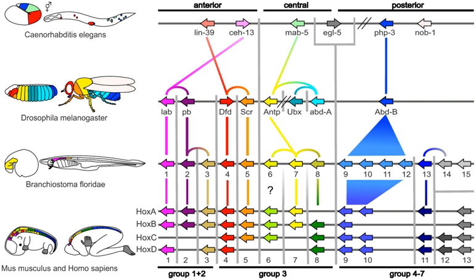New morphological features and ultimately new species are produced by variations in the toolkit, either when genes are expressed in a new pattern, or when toolkit genes acquire additional functions. Another possibility is the Neo-Lamarckian theory that epigenetic changes are later consolidated at gene level, something that may have been important early in the history of multicellular life.